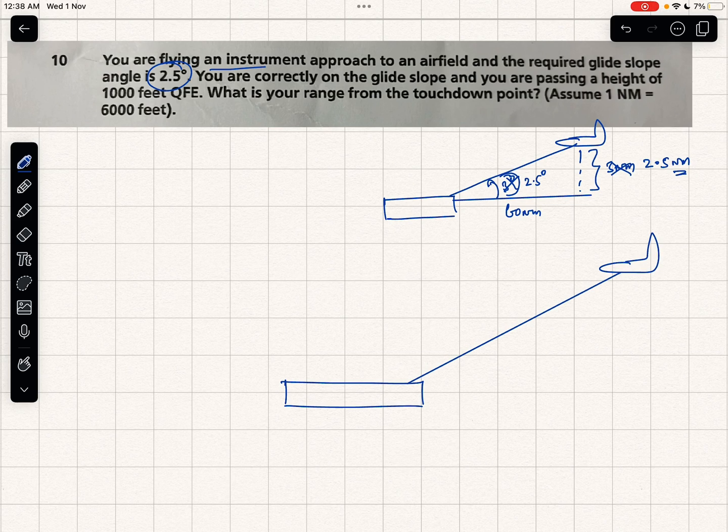The required glide slope angle is 2.5 degrees. You are correctly on the glide slope and you are passing—correctly on the glide slope means you are correct on the glide slope. You are passing a height of 1000 feet.